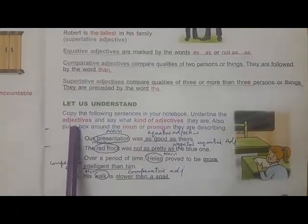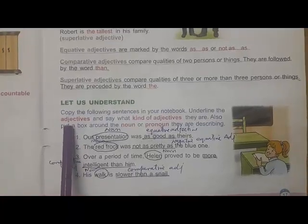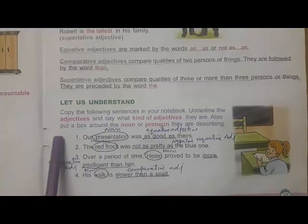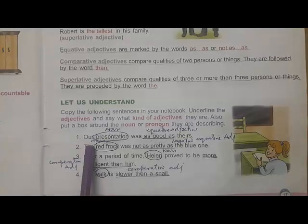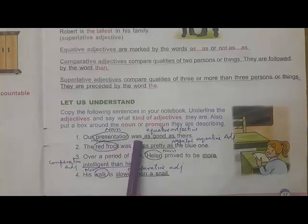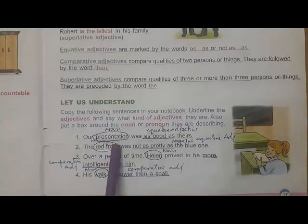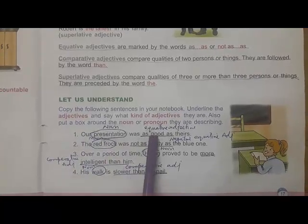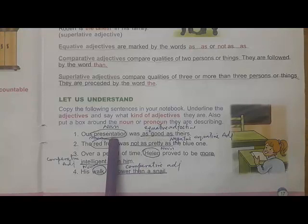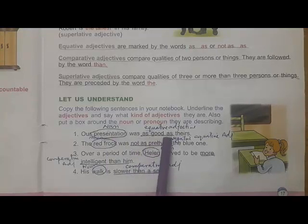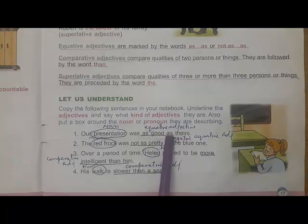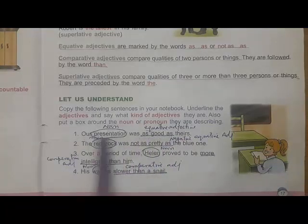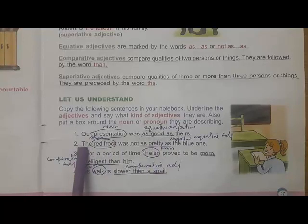I have done this exercise for you. You have to underline the adjectives, tell the kinds of the adjectives, and put a box or make a circle around the noun or pronoun that they are describing. In the first statement: 'Our presentation was as good as theirs.' Here 'presentation' is the noun, and 'as good as' is an equative adjective because we are equating our presentation with theirs.